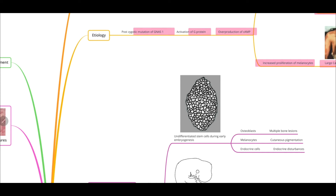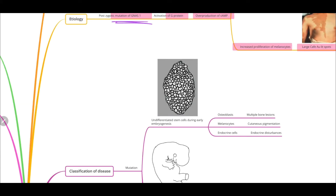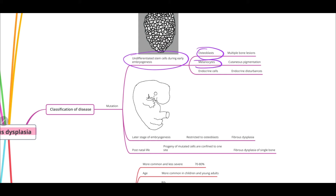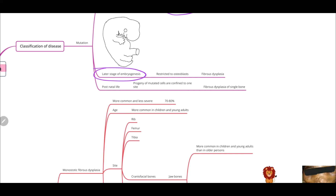Clinical manifestations are basically apparent at 5 to 15 years of age, but this mutation begins in the embryo stage. Your manifestation will depend on when this mutation happens. For example, if the mutation took place when the cells were undifferentiated stem cells during early embryogenesis, the mutation would affect osteoblasts, melanocytes, and endocrine cells — resulting in multiple bone lesions, cutaneous pigmentation (café-au-lait spots), and endocrine disturbance. If it took place at a later stage of embryogenesis, manifestation would be mainly restricted to osteoblasts. And if it took place in postnatal life, the progeny of mutated cells would be confined to one site.